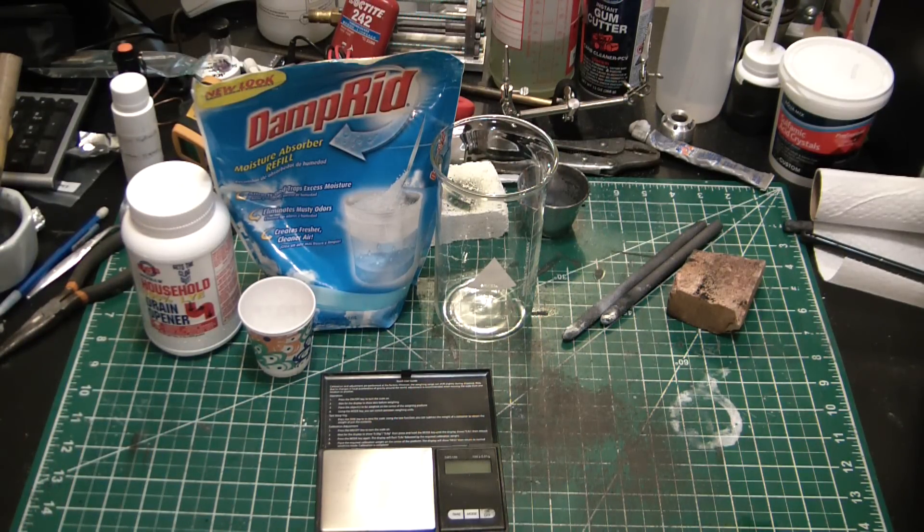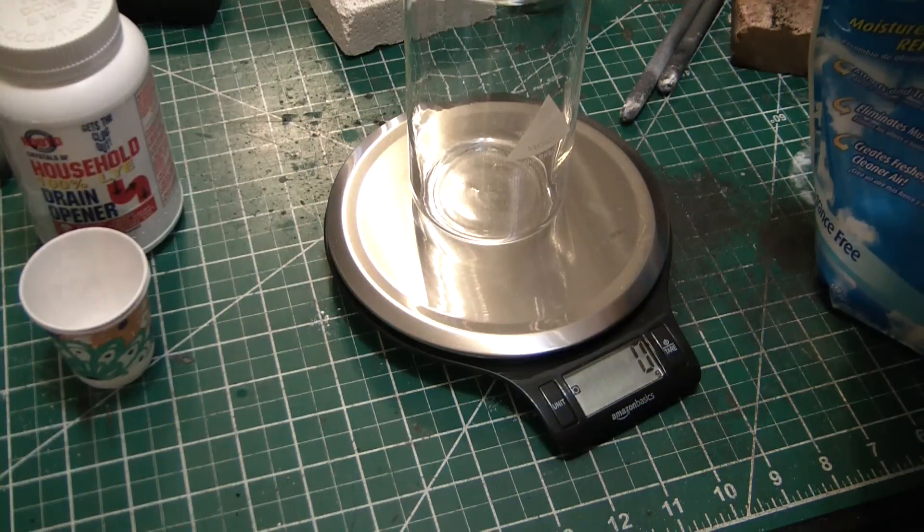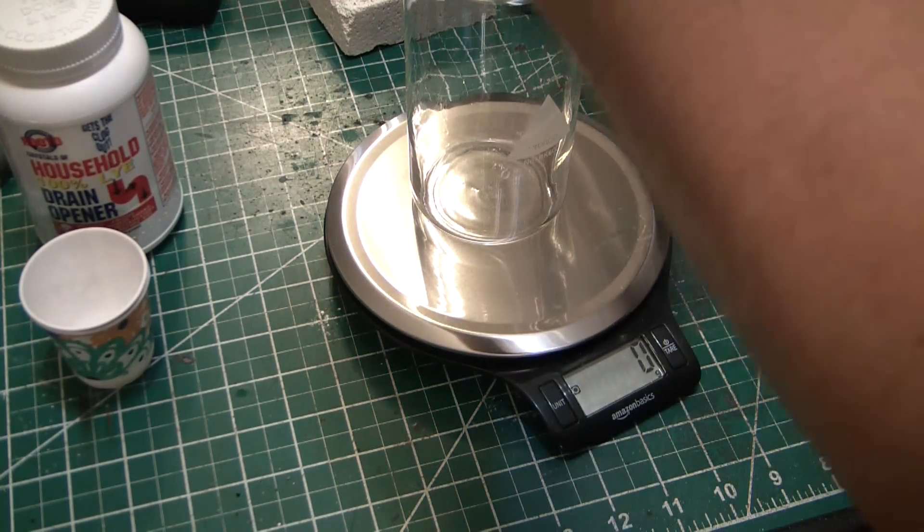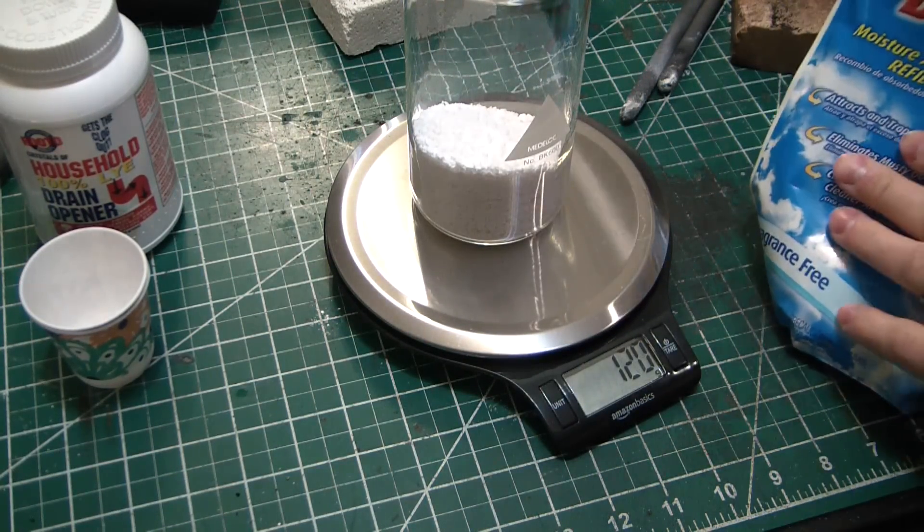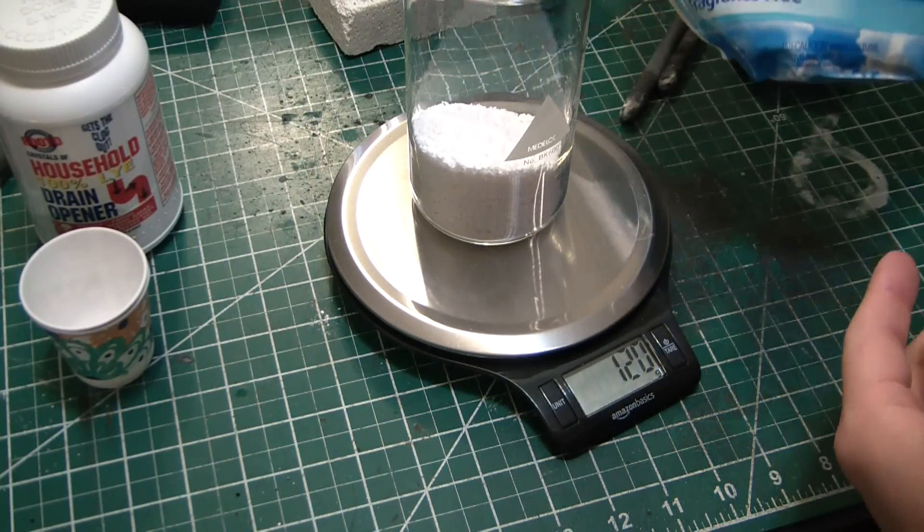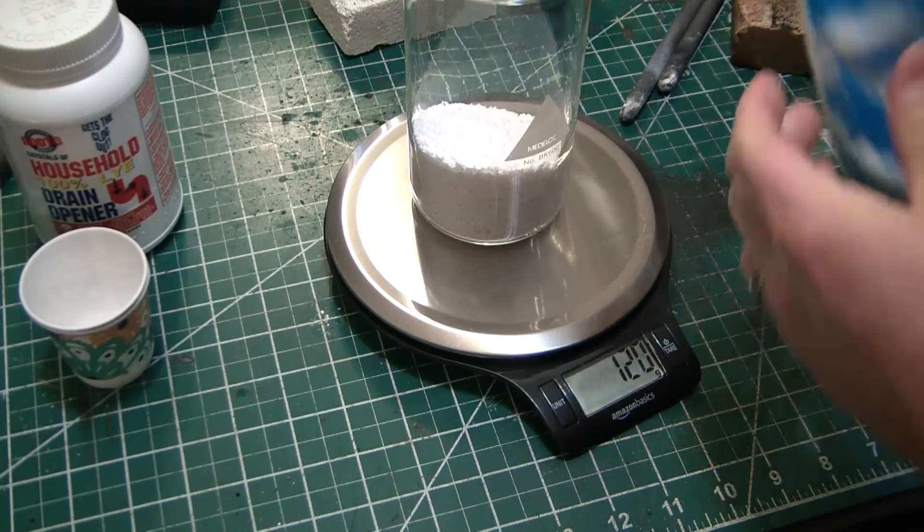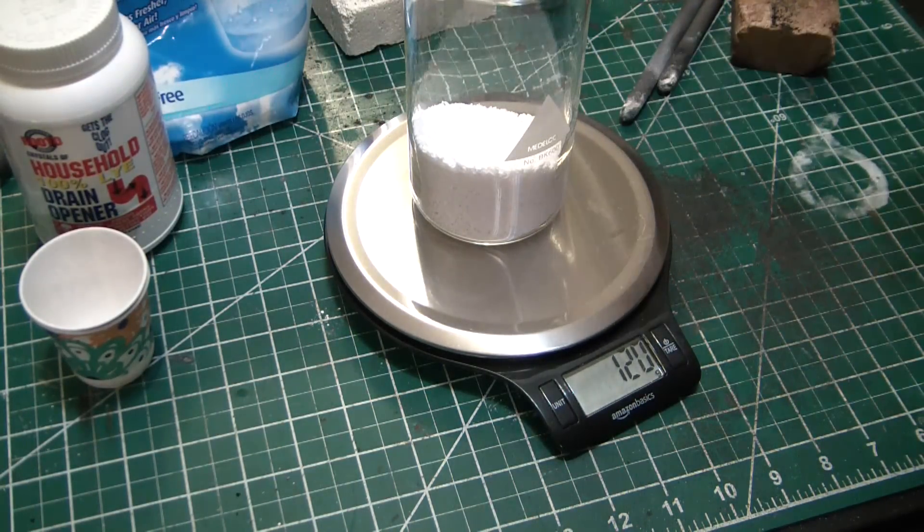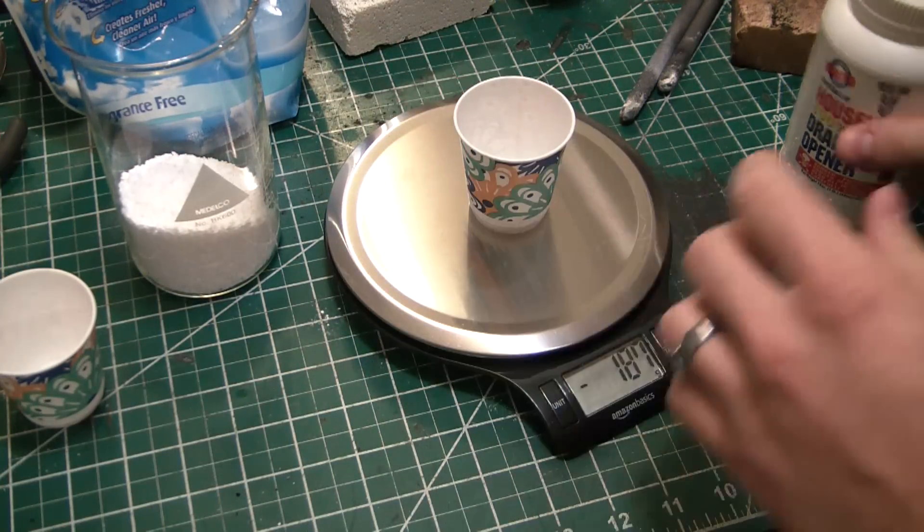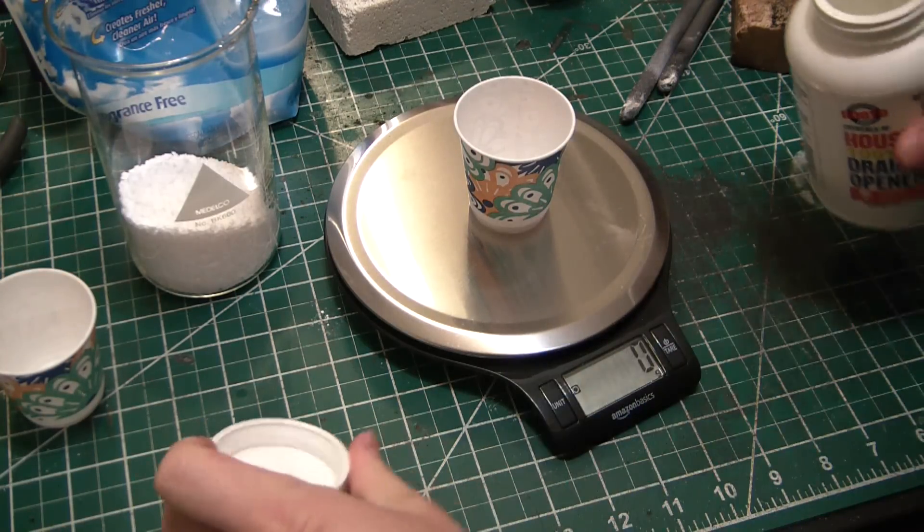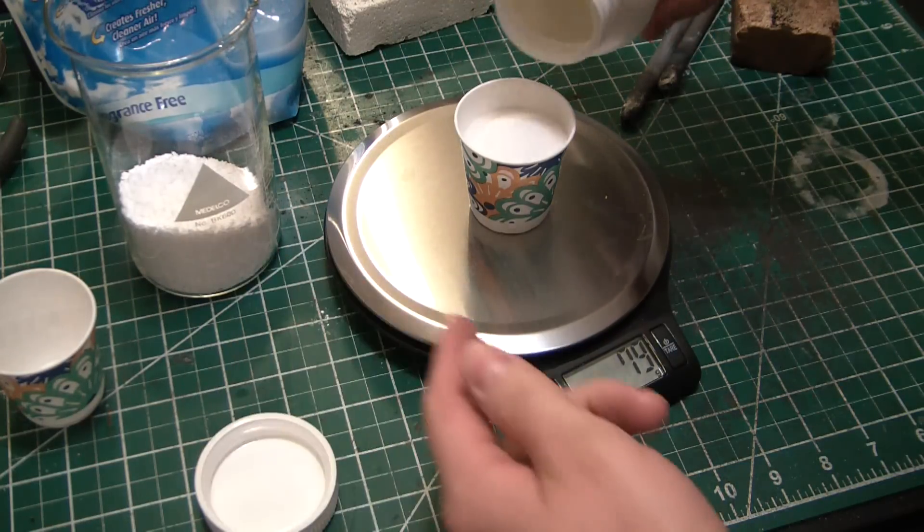So we'll tare that and measure 120 grams of calcium chloride. Now for my source, obviously I'm using DampRid, which is just calcium chloride marketed as a desiccant. It's pretty darn pure from the SDS sheets I've looked at, so I'm not too worried about using it. And then we'll measure out 80 grams of sodium hydroxide. Now at these ratios we will have a slight excess of calcium chloride. I'd rather have it that way than have any caustic leftovers.